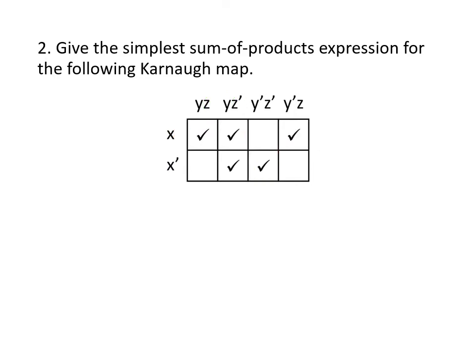Let's start another one. There are sometimes different ways to group these together, and we're going to see towards the end of this example that there are different ways to solve this one. Here we have two groups of two and one group all by itself. The term x y corresponds to this grouping where x appears as x, y appears as y, but z appears as both z and z prime.